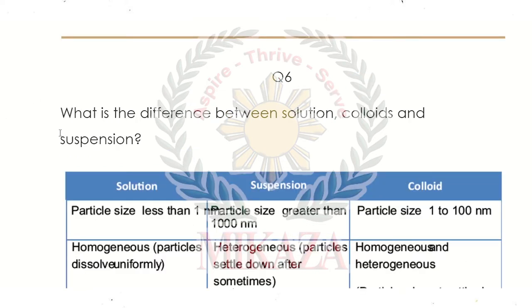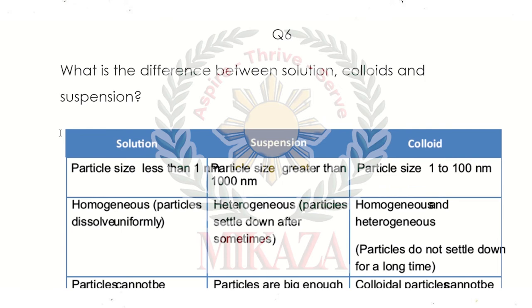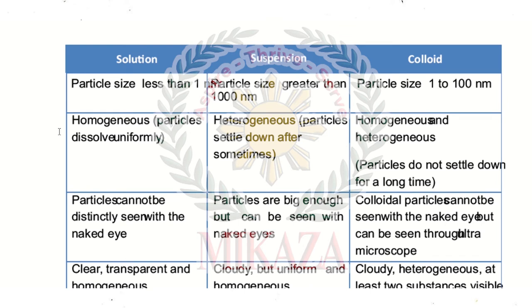Question number 6: What is the difference between solution, colloids, and suspension? Three important terms in solutions: A solution has particles smaller than one nanometer. A suspension has particles larger than 1000 nanometers. A colloid has variable particle size between 1 nanometer and 100 nanometers.